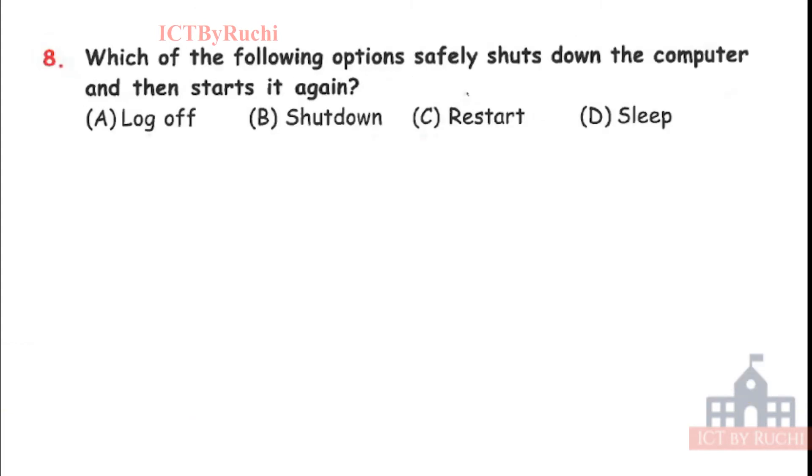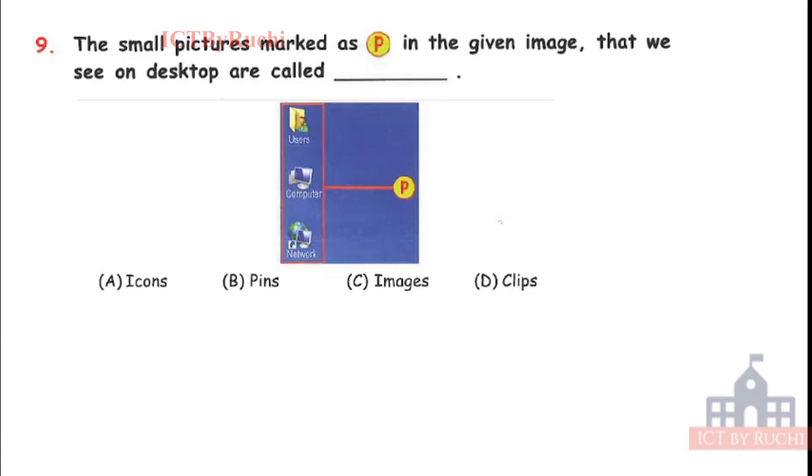Next. Which of the following options safely shut down the computer and then start it again? A. Log off, B. Shut down, C. Restart, or D. Sleep. Okay. Means we are shutting and then restarting it again. So tell me the answer. Answer is C. As the name itself says restart. Log off means we are logging off some account. Shut down, we are shutting down the computer completely. Sleep, we are making it sleep for some time. Okay. And restart, shut down and then start again.